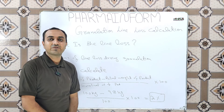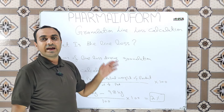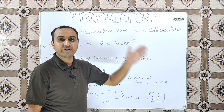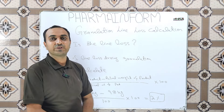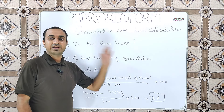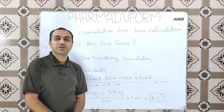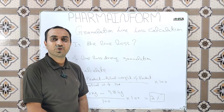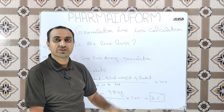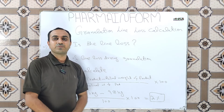We are familiar that there are two types of granulation: wet granulation and dry granulation. Line loss occurs during various stages of granulation, either wet granulation or dry granulation. If you are not familiar with the steps of dry granulation and wet granulation, the link to the video is given in the description.